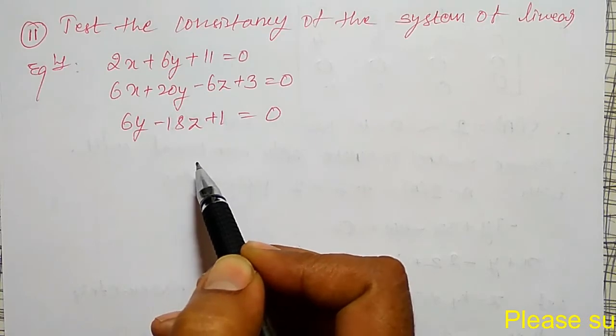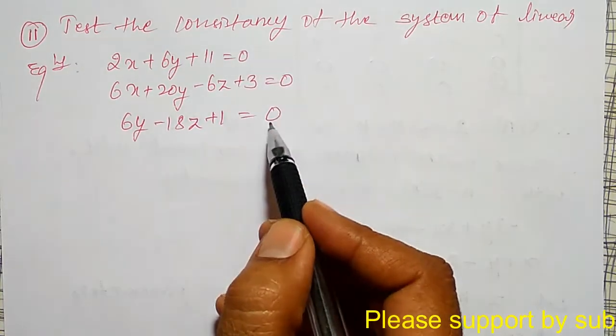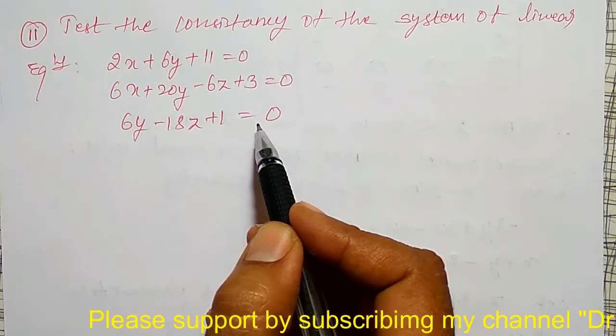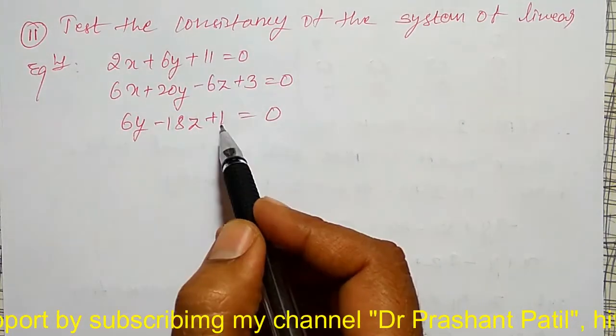Don't get confused, here the right hand side values they have given 0. It is not a homogeneous equation here. It is non-homogeneous because the constant terms are there.